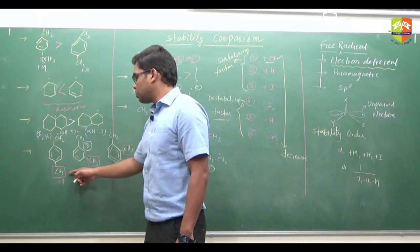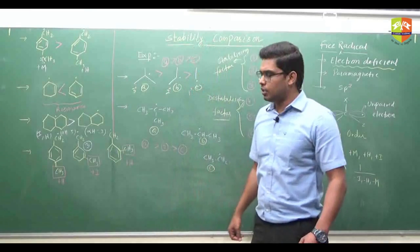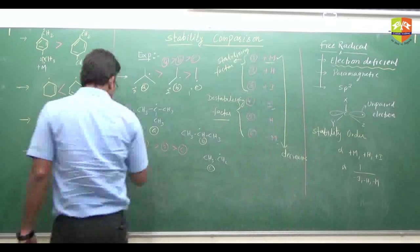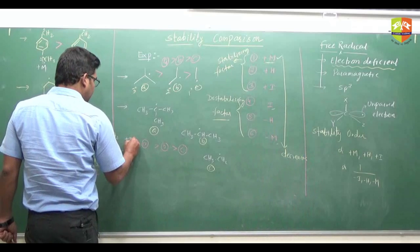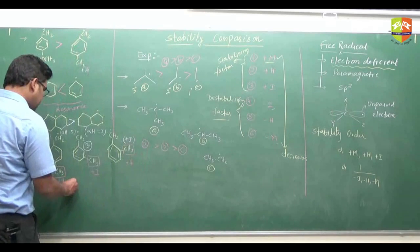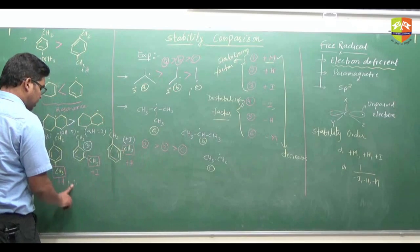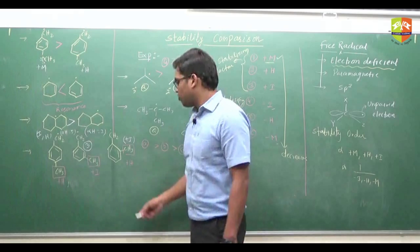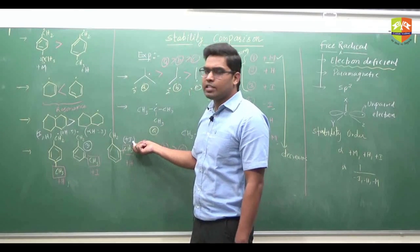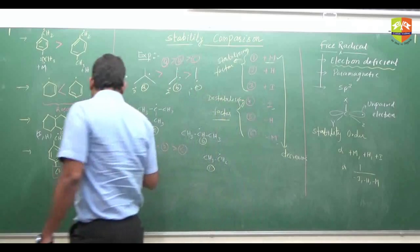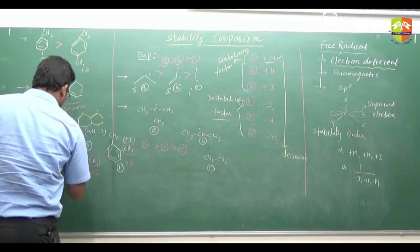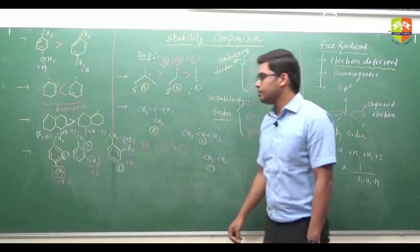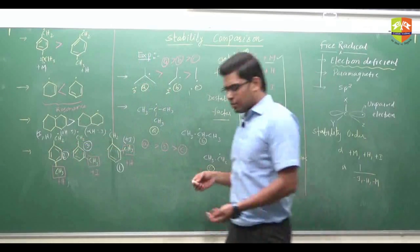These two both show +H effect, so we cannot differentiate purely by hyperconjugation. However, the CH3 group also has a tendency to show +I effect. At the para position, this +I tendency is very less and generally we do not consider it strongly, but apart from +H we have +I nature here as well, and hence the stability of this is more than the other. So the order is first, second, and then third.